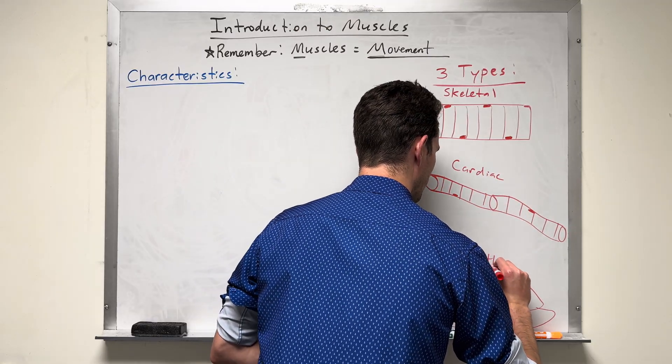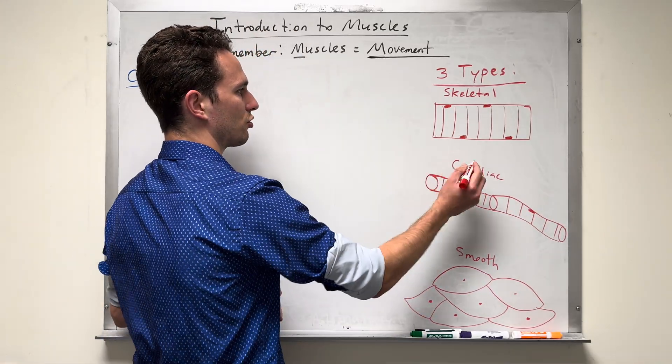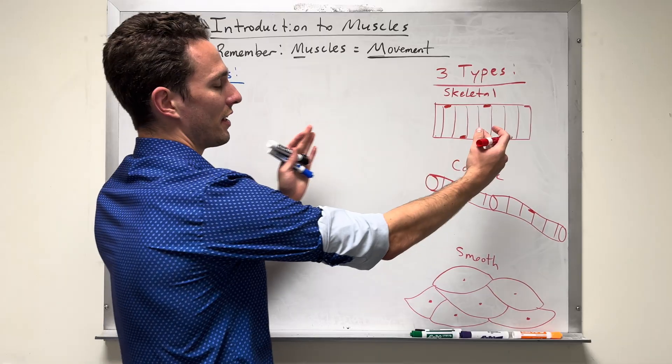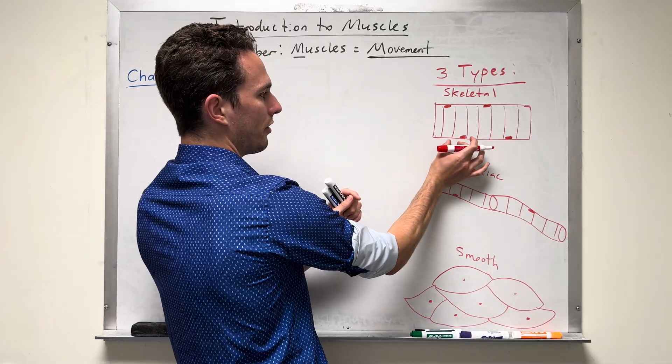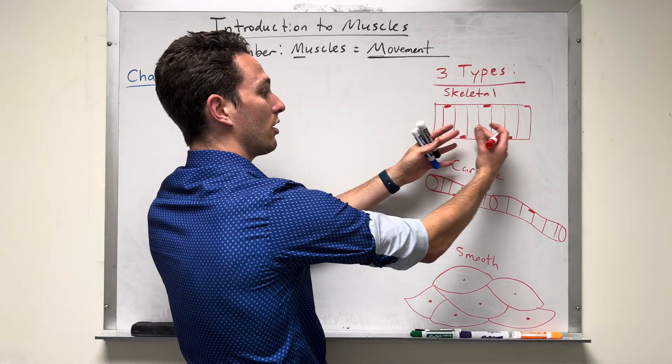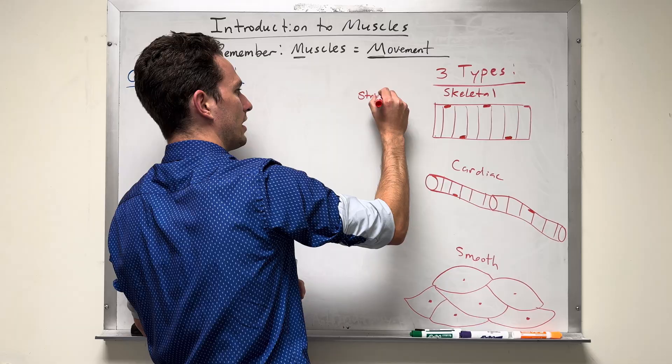Skeletal muscle is striated. What does that mean? It has stripes. We've got these lines here, and that's going to tell us that it's going to contract by bringing all these lines together, thus to contract the tissue, and then they can also relax and extend. So remember that skeletal muscle is striated.